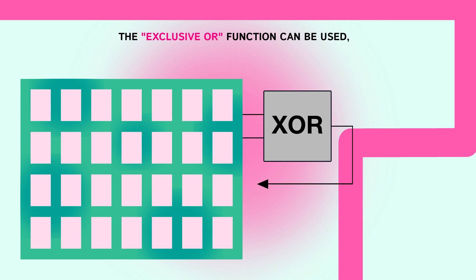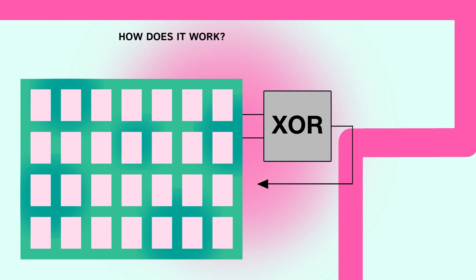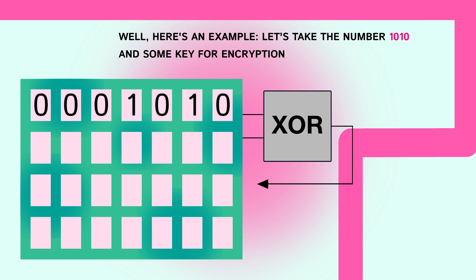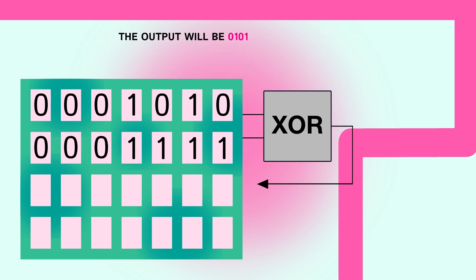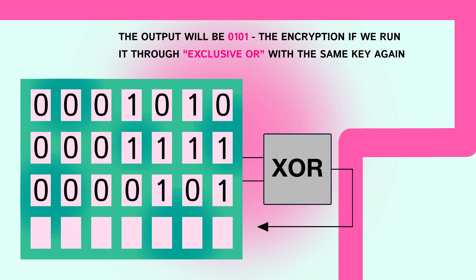The exclusive OR function can be used for example to encrypt a number or to swap the values of two variables without using a third. How does it work? Well, here is an example. Let's take the number 1010 and some key for encryption, for example 1111. Run them through exclusive OR. The output will be 0101, the encryption. If we run it through exclusive OR with the same key again, we will get the original number 1010.